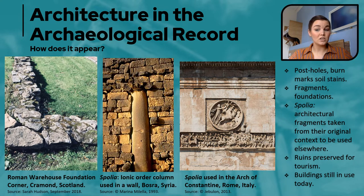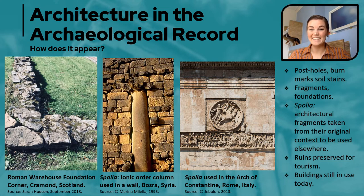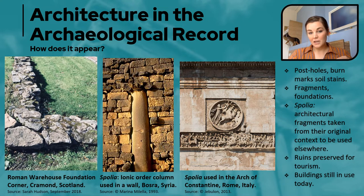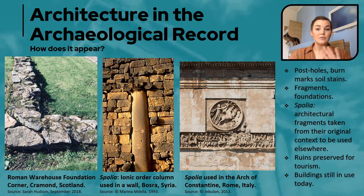Moving along from that, we have foundations — like this one from the Roman Fort in Crammond — which is a little more substantial than post holes, but still limited in terms of the information it can give us about how the space was used and what the space would have looked like. Was it two stories? Was it one story? It's hard to tell for sure, but we can draw comparative analysis with other Roman buildings from many different areas across Europe and so on.